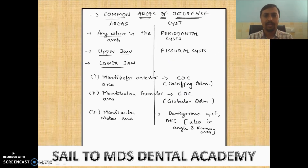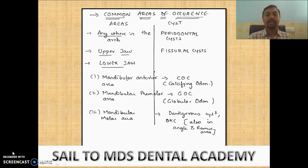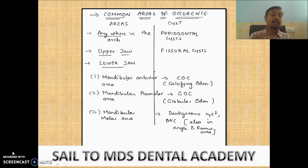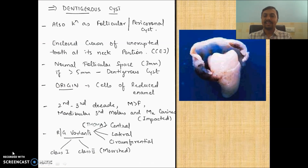Common areas of occurrence: odontogenic cysts can occur anywhere in the arch. In the upper jaw it is more related to fissural cysts. In the lower jaw, cysts are mostly found anteriorly - the calcifying odontogenic cyst in the premolar area, the glandular odontogenic cyst, and in the posterior molar area there can be a dentigerous cyst. The odontogenic keratocyst can also involve the angle and ramus of the mandible.